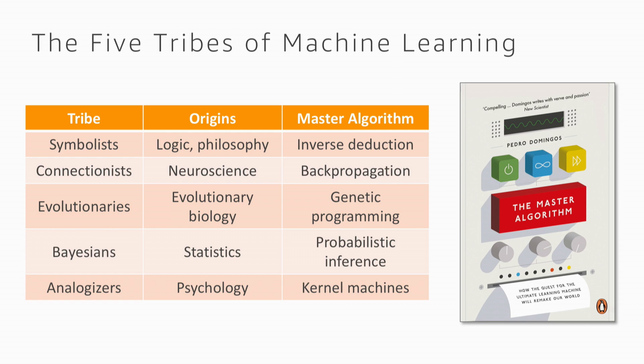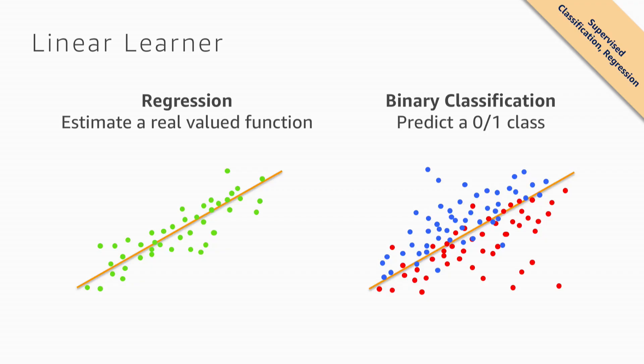In machine learning, people come from neural networks or neuroscience, statistics, Bayesian networks, psychology, and logic — all different ways of approaching a similar problem. But if we want to start simple, the basic algorithm that is still very powerful is linear models.